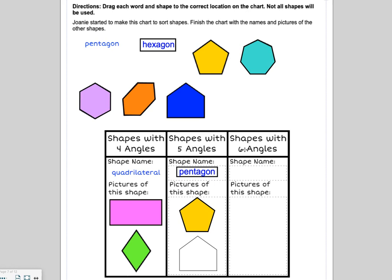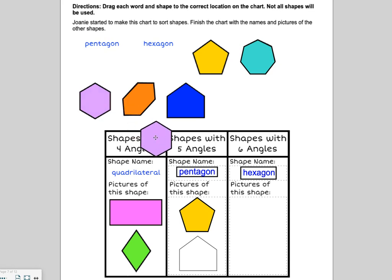Next, it says shapes with six angles. So we know I already used pentagon, so I'm going to have to put hexagon over here. What two shapes do you think will go in that part of the chart? So if we counted one, two, three, four, five, six, we know that this purple shape should go there. And if we did the same thing, one, two, three, four, five, six, we know that the orange shape, which doesn't want to move with its color, should go there.